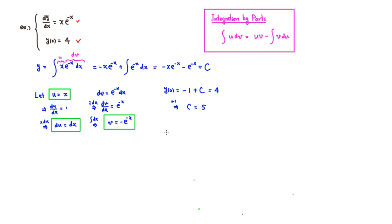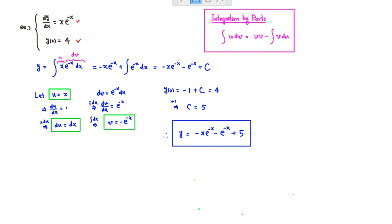Therefore we have a complete solution. Y is equal to negative x e to the negative x, minus e to the negative x, plus 5. This is the solution of the initial value problem. I hope that this was clear.